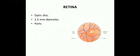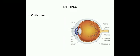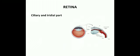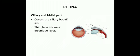The retina has three parts: the optic part, the ciliary part, and the iridial part. The optic part contains nervous tissue sensitive to light, extending from the optic disc to the posterior end of the ciliary body, with the anterior margin forming the ora serrata. The ciliary and iridial parts of the retina cover the ciliary body and iris, are thin and non-nervous, and are insensitive, made up of two layers of epithelial cells.